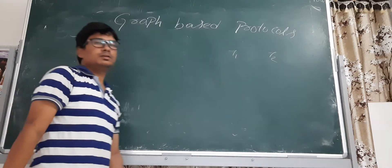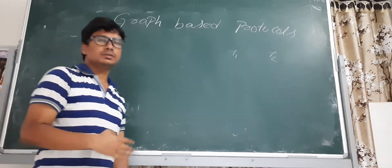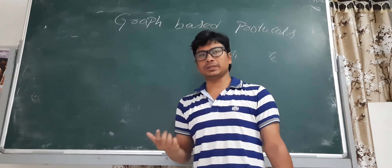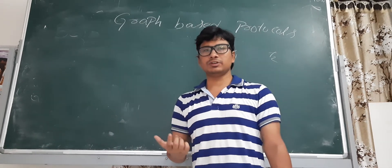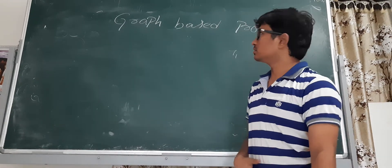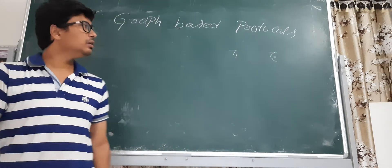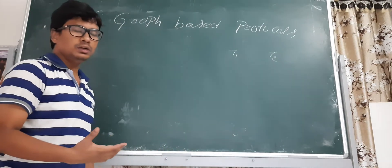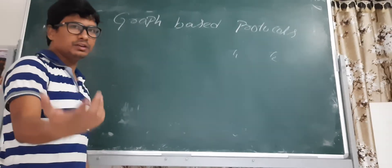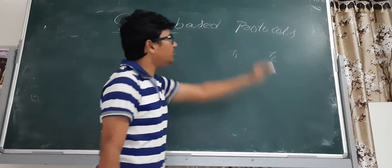Good morning students. We'll discuss graph-based protocols. Earlier we discussed 2PL — two-phase locking protocols — strict 2PL, rigorous 2PL, conservative 2PL; all these are variants of locking-based protocols. Now we'll discuss another variant which is the graph-based protocol, and how it is different from the other variants like 2PL.